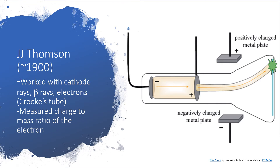Around 1900, J.J. Thomson was working with a Crookes tube — that is a cathode ray tube — so he was working with beams of electrons or beta radiation. He would take a cathode ray and apply an electric field or a magnetic field to it, and based on Maxwell's equations and how much the beam of electrons deflected, they were able to figure out the charge-to-mass ratio of the electron. They were able to get this ratio, but neither the charge nor the mass independently. This would be like running an experiment where you could measure the density of something but could not get the mass or the volume independently.